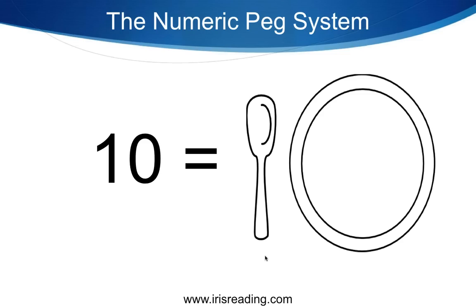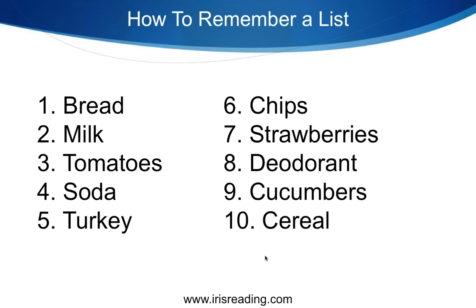Quick recap of six through ten: six is cherry, seven is lightning bolt, eight is racetrack, nine is balloon, ten is a place setting. Now that we have numbers one through ten all visually associated, we go back to our grocery list and create visual associations between each number's image and the item we need to memorize.